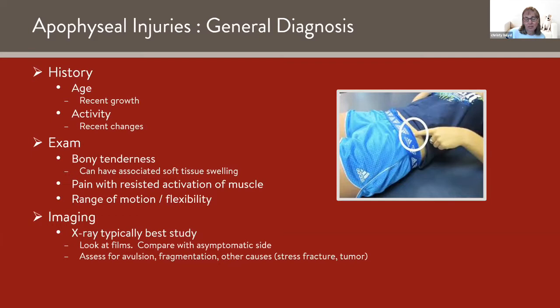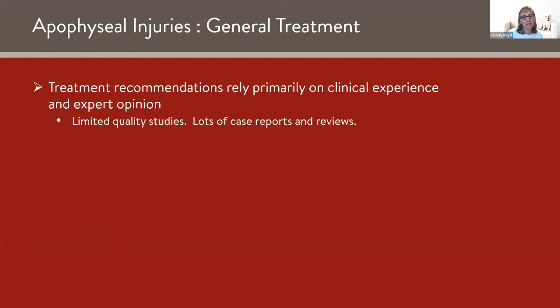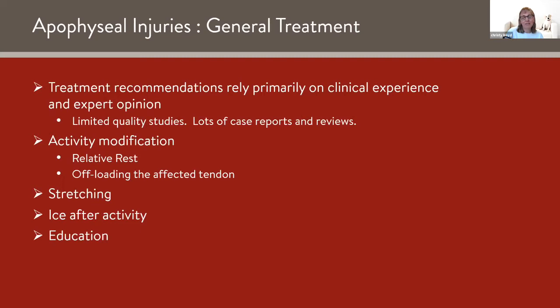Typically by the time somebody comes to my office, I end up getting x-rays. If there's no swelling, no bony tenderness, and just some achiness after activity, x-rays aren't always needed. Occasionally I use an MRI if the diagnosis is in question. Generalized treatment recommendations unfortunately rely a lot on clinical experience and expert opinion — there's very limited quality studies, mostly case reports and reviews. Activity modification, relative rest, offloading, stretching, and icing are the mainstays of treatment. Education is also important to inform the athlete and family about what this is and how long it will last. Early detection is key so you can manage it and get them back to activity in a modified fashion sooner.